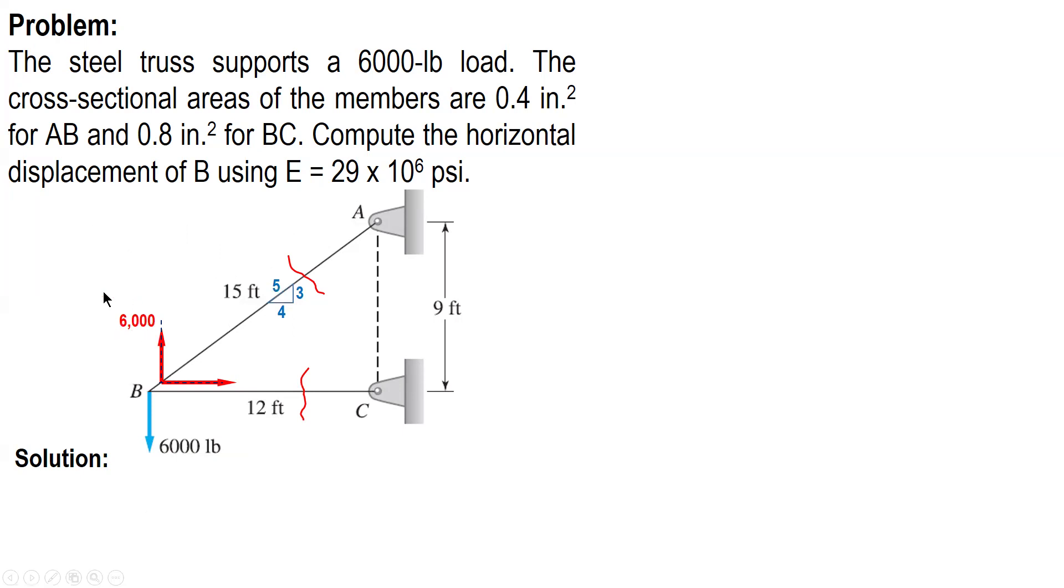From this vertical force, compute the horizontal component. We use this by ratio and proportion. 6,000 vertical divided by 3, 2,000 times 4, 8,000.